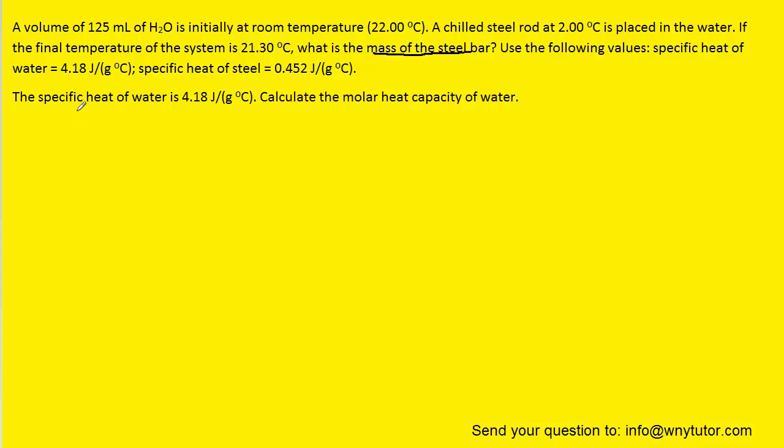For the second question, we're being asked to calculate the molar heat capacity of water based on the specific heat of water. So what we'll do is simply write down the specific heat and we will use the units that they gave us: joules over grams times degrees Celsius. The molar heat capacity of water is simply the number of joules per mole times degrees Celsius. All we have to do is set up a conversion so that the grams will cancel out and leave us with moles in the denominator.